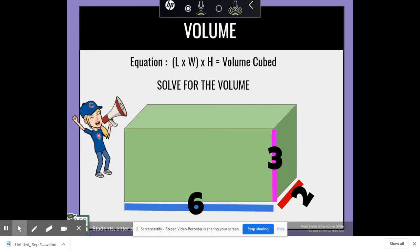We would plug in 6 for the L, 2 for the W, and 3 for the H. So we would have 6 times 2 times 3, which would give us 36 volume cubed.